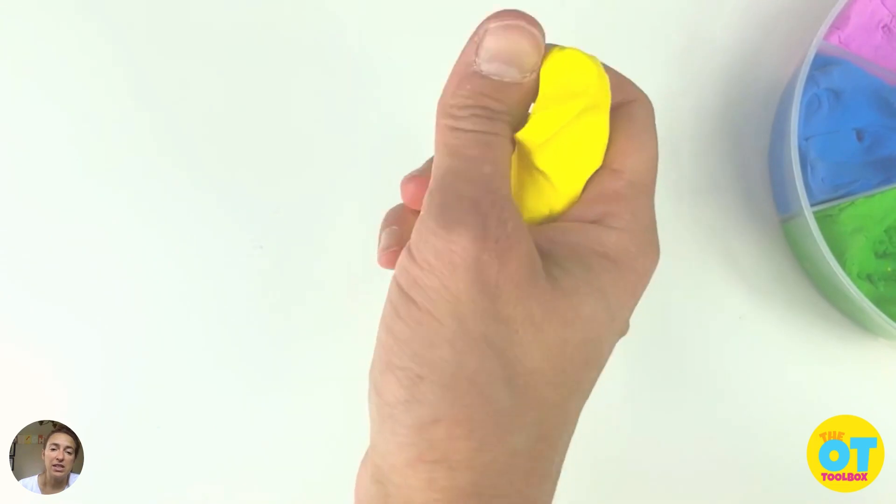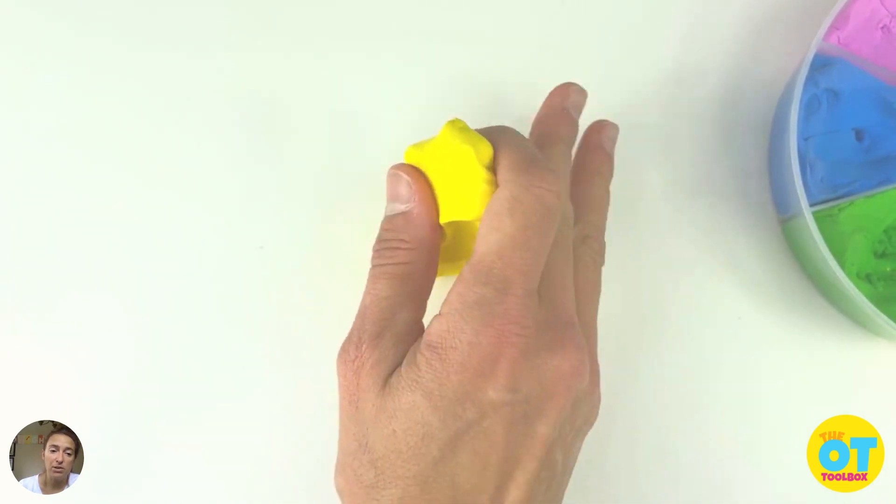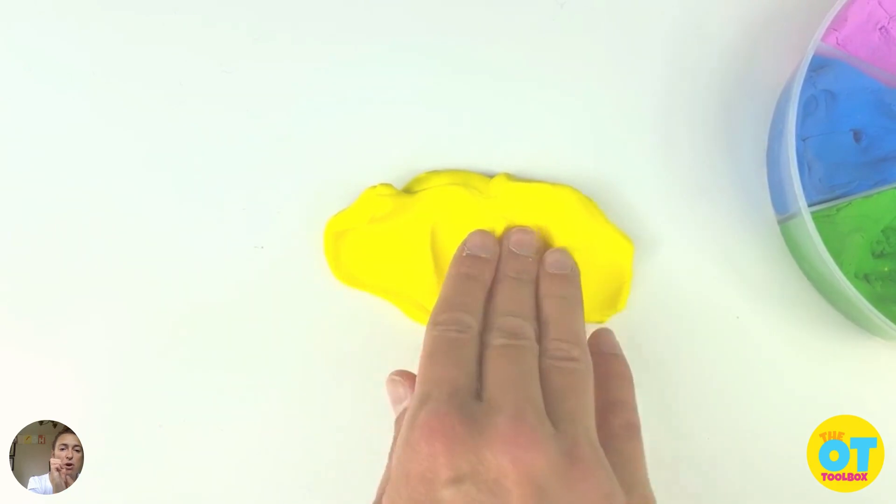Next, you're doing another form of a tendon glide exercise where with some resistance, you're pulling the fingertips into the palm.